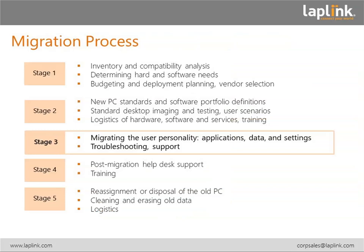When we talk about the migration process, I always look at five stages. Stage one is the inventory and compatibility analysis — looking at what hardware and software you have, what budgets you have, and doing all your planning with vendors. Stage two is defining the software and hardware portfolio: what imaging and testing you'll do, what user scenarios, and planning all the logistics of hardware, software, services, and training. Stage three is the migration of the user personality — the transfer of application data and settings, as well as troubleshooting and support for end users.